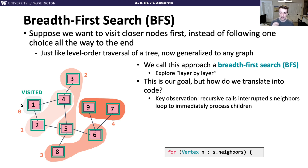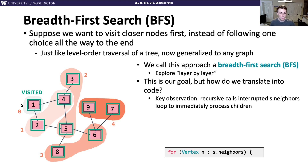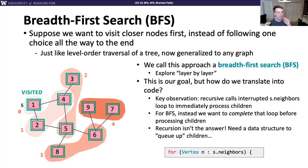But it's not clear how to do this, because the way DFS was written it needs to make recursive calls. The problem is that a recursive call inside the loop interrupts the loop — before going to the next iteration, you have to run the entire recursive function. That interruption stops us from exploring, say, nodes two and four right next to each other. For BFS, we want to complete that loop before processing the next children, so recursion is not our answer here.